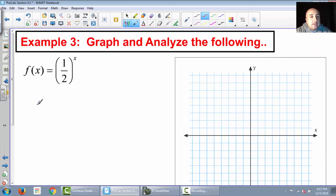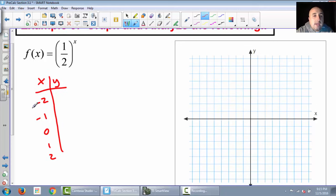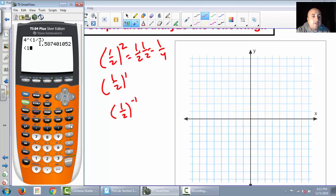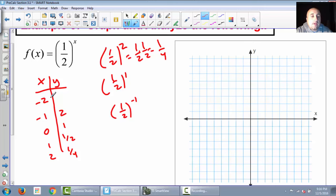Let's do another one. This one is 1 half raised to the x. So we're going to do the same x-y table. We're going to do negative 2, negative 1, 0, 1, and 2. And we're going to plug in some numbers here. So let's start at the bottom again. 1 half squared, that's 1 half times 1 half, that is 1 fourth. 1 half to the first is equal to just 1 half. 1 half to the 0, anything raised to 0 is just 1. 1 half to the negative 1, that's going to be 2. And negative 2 would be 4.